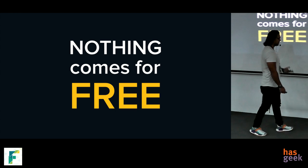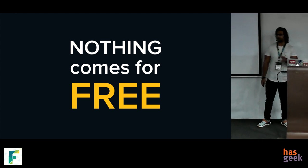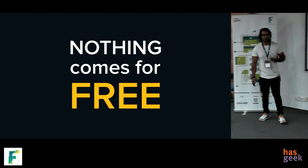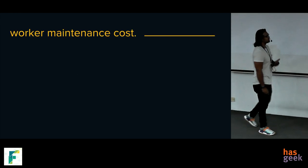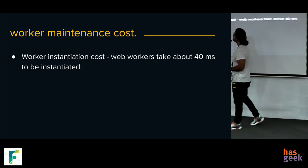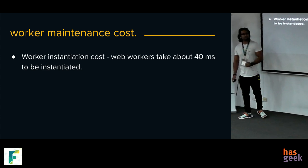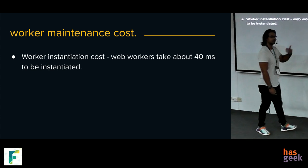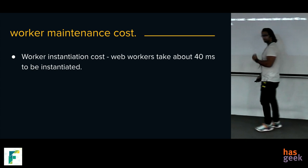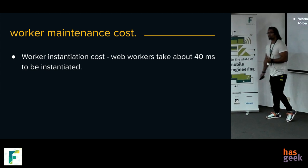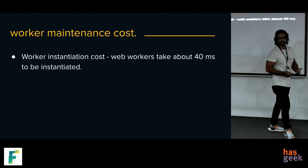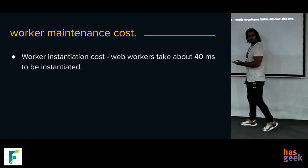But nothing comes for free. When we decided to use a Web Worker to keep the main thread free for user gestures, the application pays a different cost. The first is the creation cost of a worker — there's an instantiation cost of around 40 milliseconds on a decently sized device. However, this is not a really big problem because as a developer you could build a worker pool, keeping a set of workers so you don't create them again and again but rather reuse them.